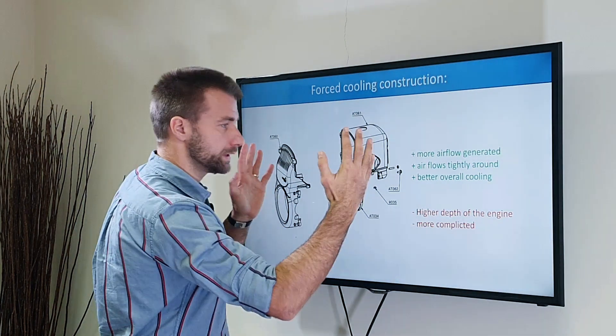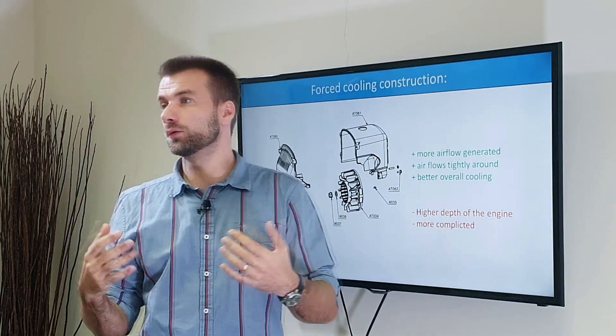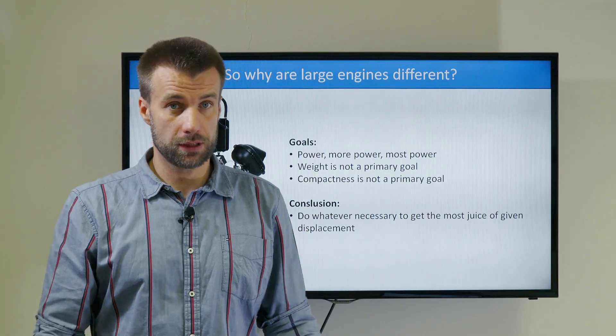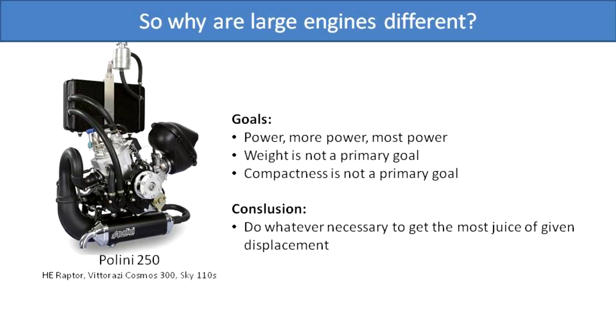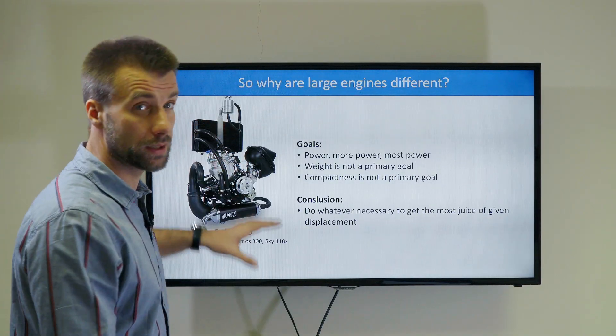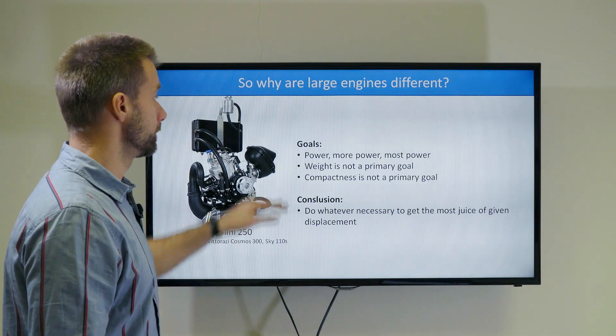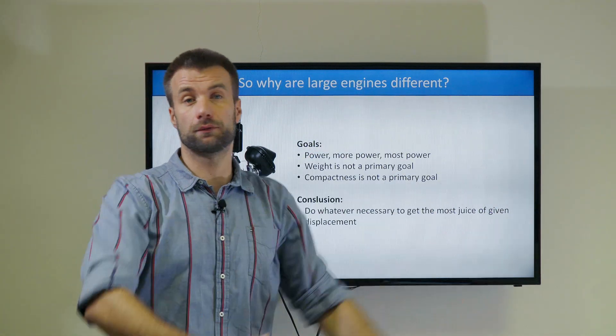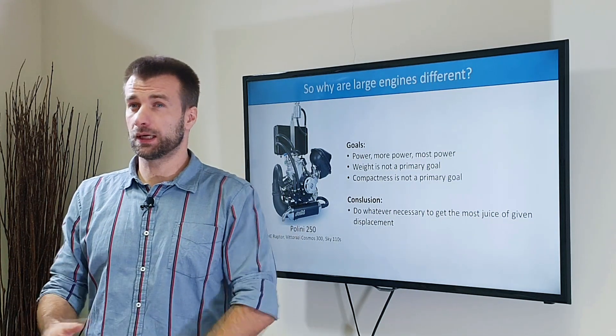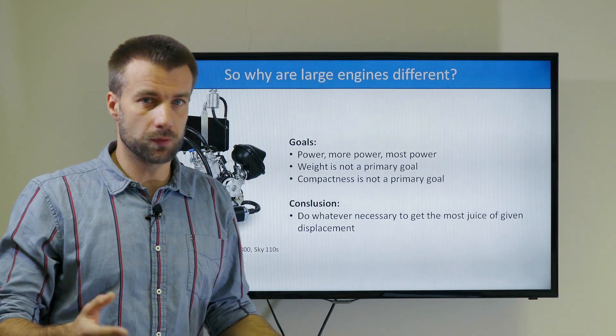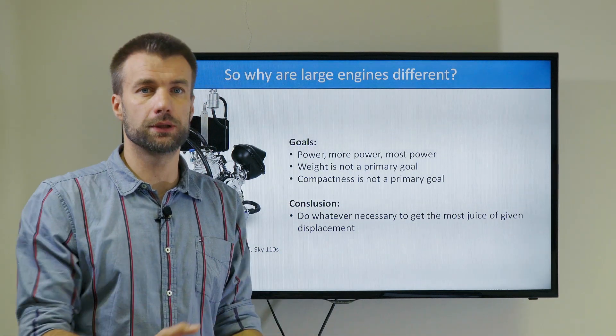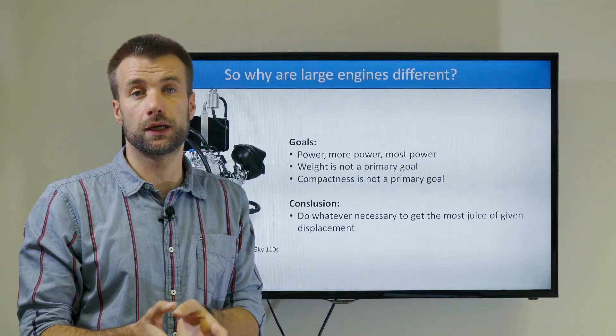Now let's talk about big fat powerful engines. Why don't we just use forced cooling on big engines? When an engineer is designing a big fat powerful engine for paramotor use, what are the goals? Power, more power, and the most power. These engines are mostly used for trikes and slalom racing, and in both you just want the most power possible to get out of that limited cc engine.